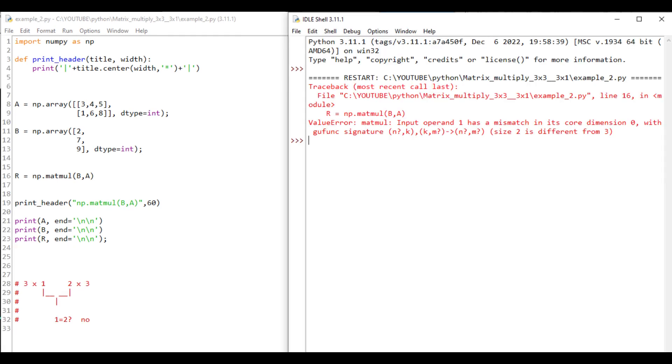Look on line 16. I say R equals np.matmul B comma A. Well, B is a 3 by 1, A is a 2 by 3. Let's go down to line 28. 3 times 1, and then I got the goalpost, 2, 3. Does 1 equal 2? No. We can't multiply these. That's why we got this big red error on the right.